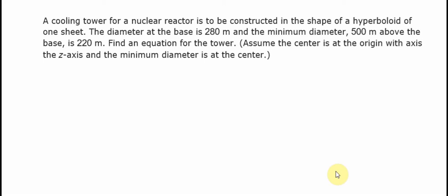Hello everybody. Today I will talk about calculus — the topic is about hyperboloids. I will use a real question to illustrate. A cooling tower for a nuclear reactor is to be constructed in the shape of a hyperboloid of one sheet. The diameter at the base is 280 meters, and the minimum diameter 500 meters above the base is 220 meters. Find an equation for the tower.